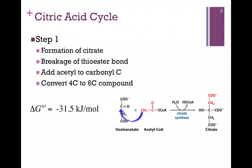The name of the enzyme is citrate synthase. In fact, the cycle is named for this first product, citrate, or citric acid. You may also see it referred to as the TCA cycle, or the tricarboxylic acid cycle, because our product citrate has three carboxylic acid groups. You may also see it referred to as the Krebs cycle, named for the scientist who elucidated the cycle.